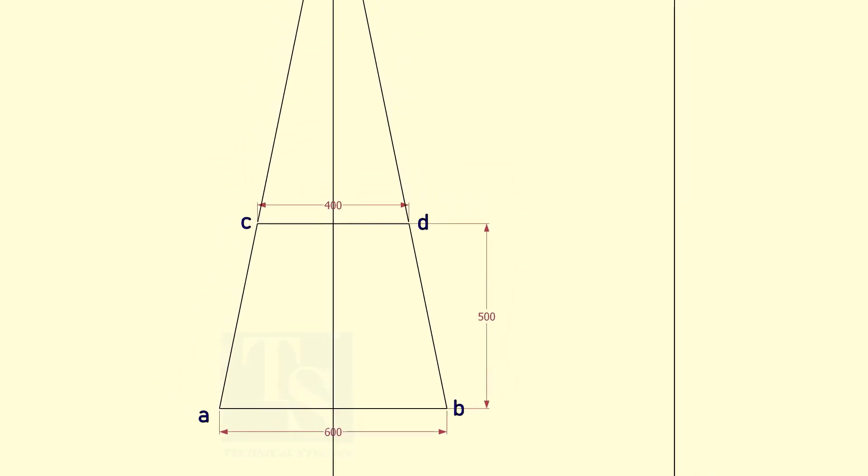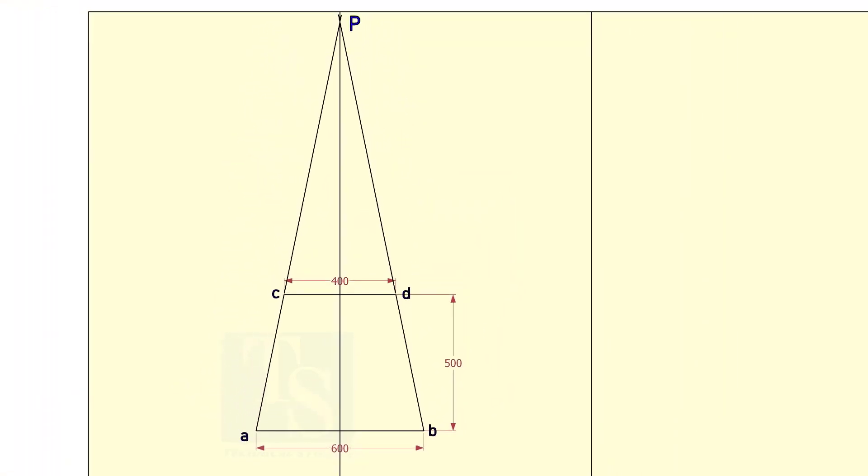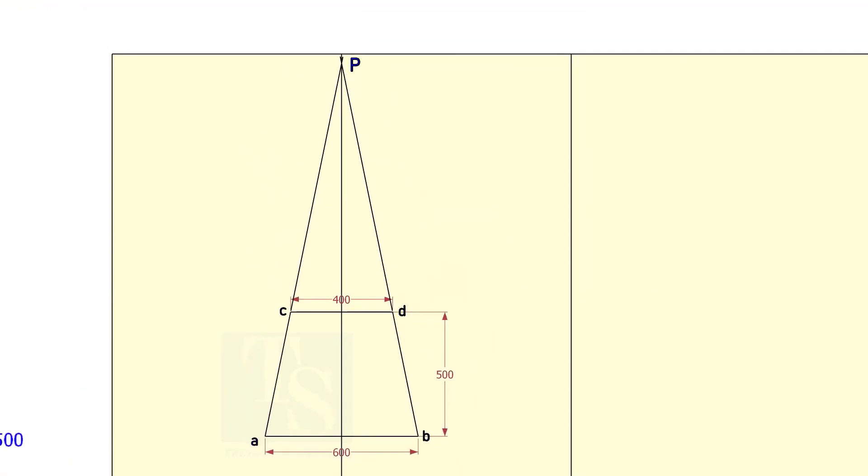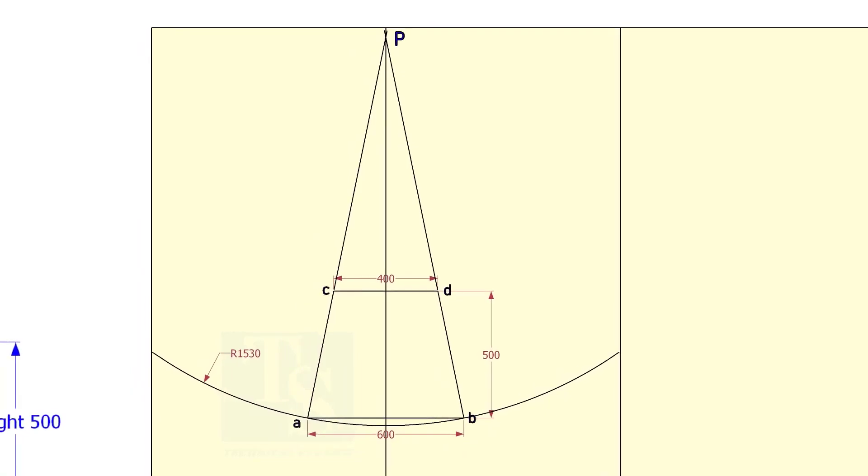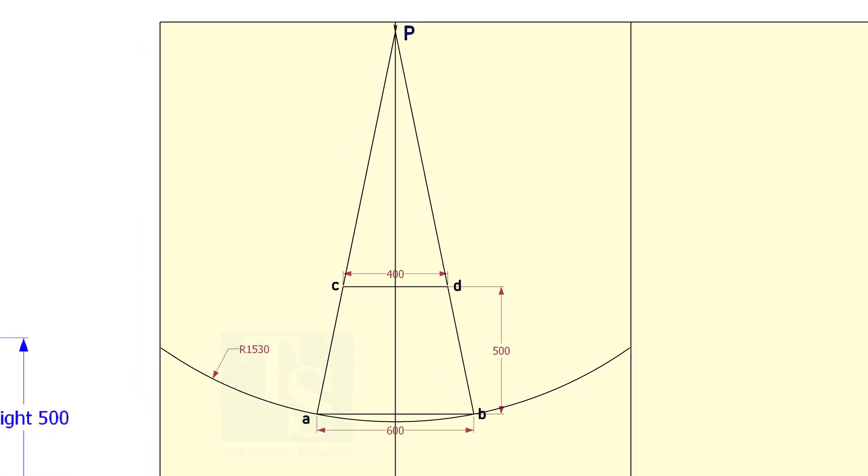Extend the lines AC and BD until the lines intersect each other. Draw an arc, centering P, and the radius PA. Draw the arc PC.